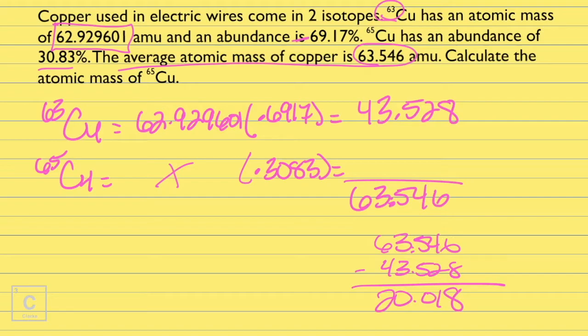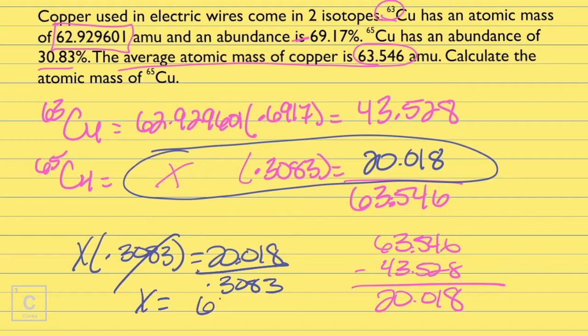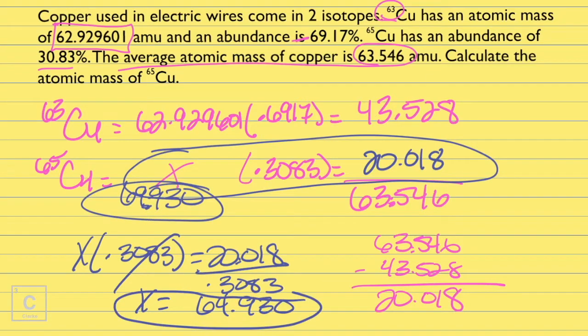That's what goes in this spot. So now, we can work this algebra problem. We have X times 0.3083 equals 20.018. So since our X is being multiplied, to get X all by itself, we need to divide. And so, X equals 64.930. Okay y'all, I hope that made sense. Let's do another problem.